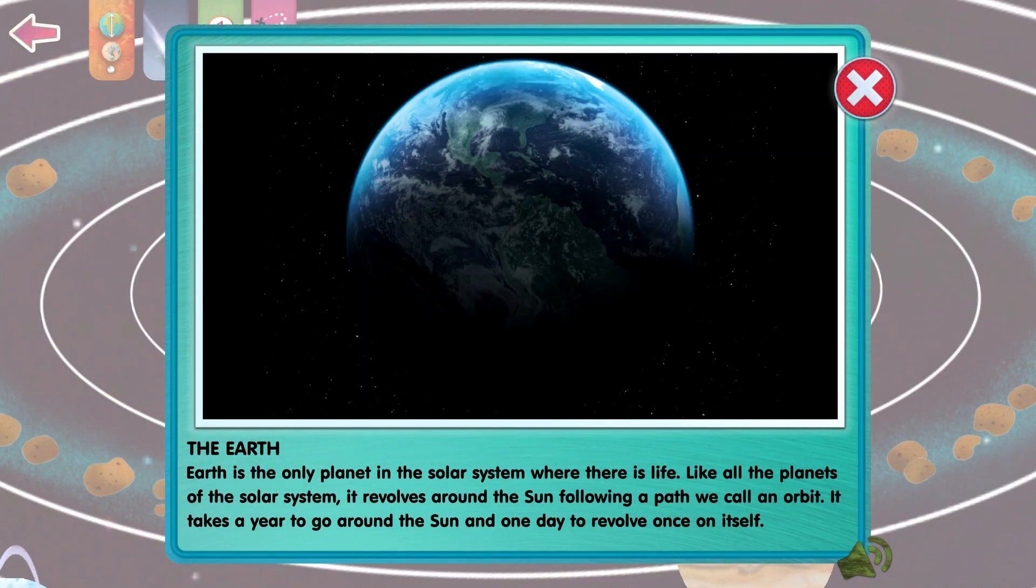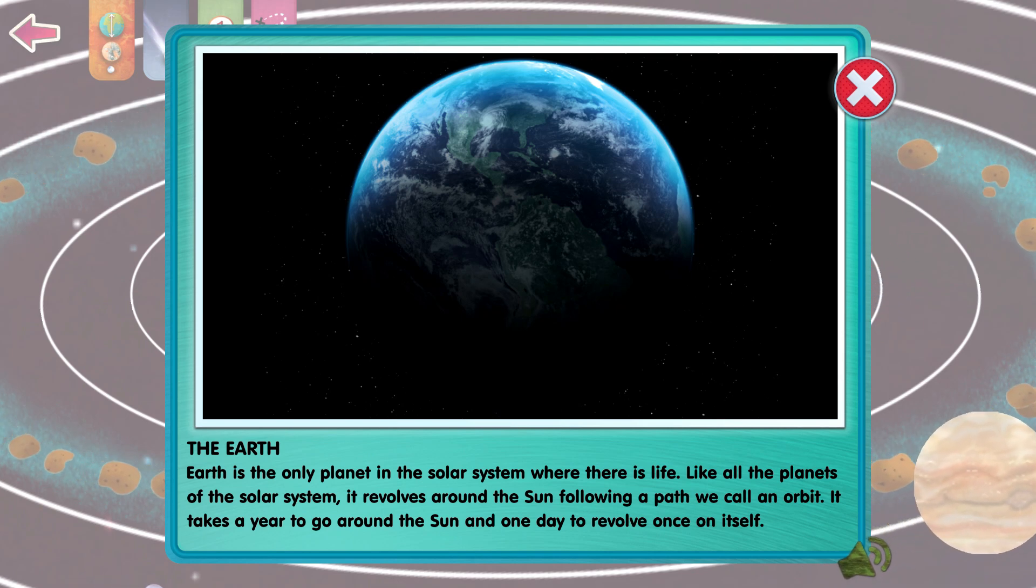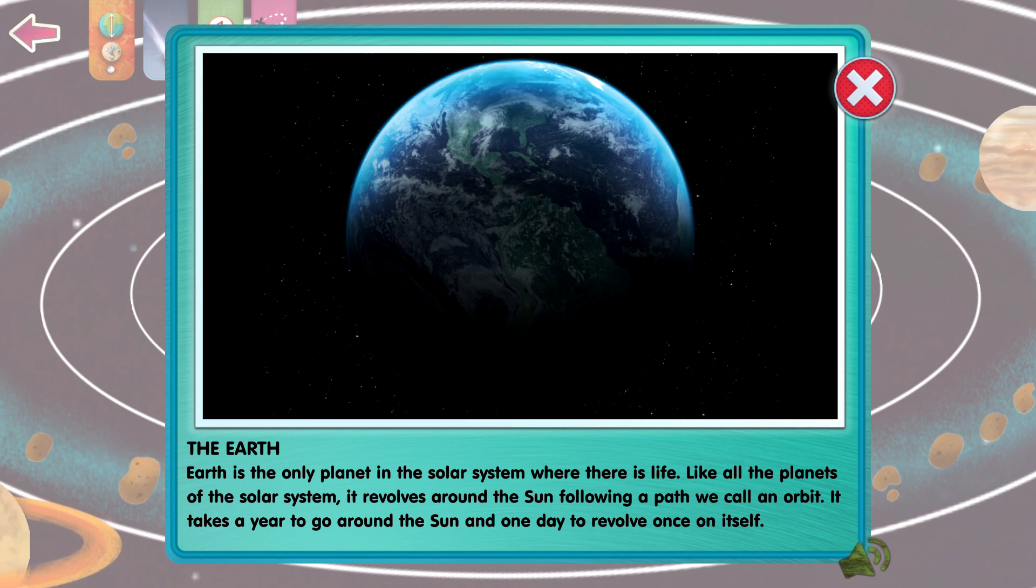Earth is the only planet in the Solar System where there is life. Like all planets of the Solar System, it revolves around the Sun, following a path we call an orbit. It takes a year to go around the Sun and one day to revolve once on itself.